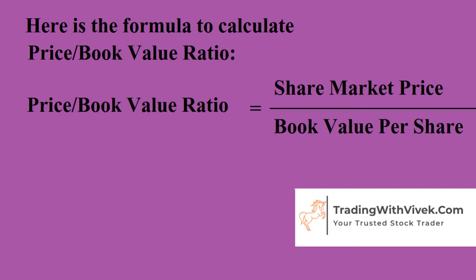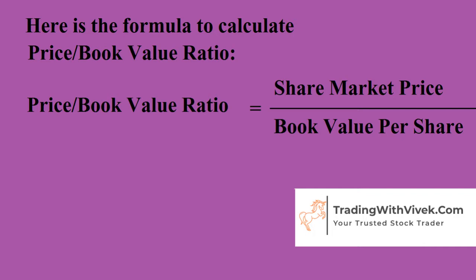Here is the theoretical formula. The Price-to-Book Value ratio is derived by dividing the share price by the book value per share. The share price means the current market price of the stock. The book value per share is a term derived as follows: Book Value per Share = Shareholders Fund divided by Total Number of Shares.